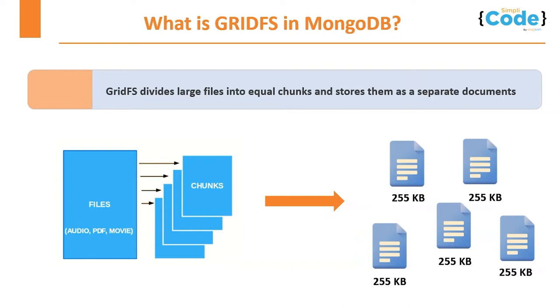Because files are separated into smaller parts, it is easier to access specific areas of a file, which saves memory tasks such as loading the whole file.